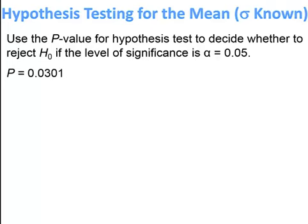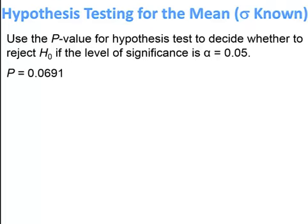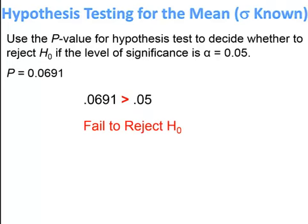In the fourth pause-and-try problem, the p-value was given, so all you had to do was compare it to alpha — we ended up rejecting the null hypothesis. In the fifth, you just compared the p-value to alpha and it fails to reject the null hypothesis.